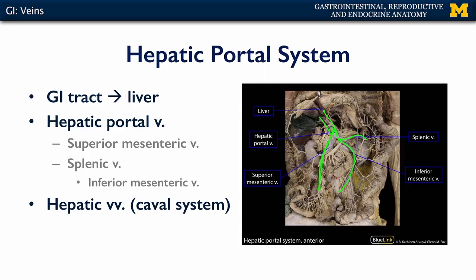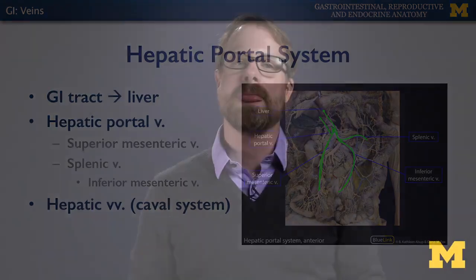All of that blood from the gastrointestinal tract — all of those absorbed nutrients — can be processed by the liver. This is called the portal system, which is distinct from the caval system.